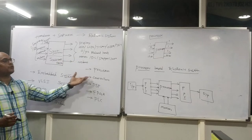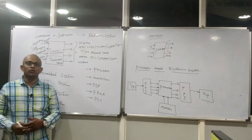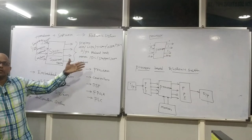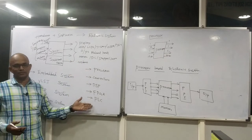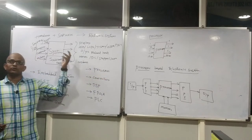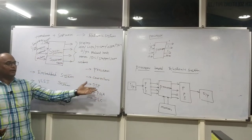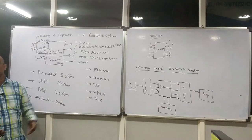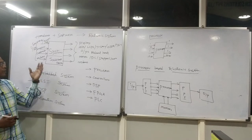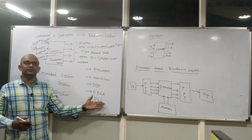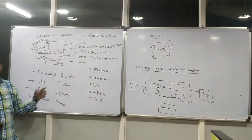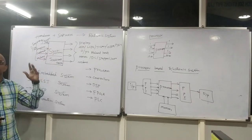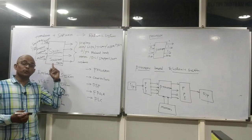Based on these programmable devices, you can design your system. The system is not always designed with only a processor or only a controller. Based on requirement, you have to choose your programmable devices. Every product is not going to maintain always with a processor — maybe you may find a PLC, maybe FPGA, digital signal processors, controllers, or processors. Based on the category of these intelligent devices, you are calling the system with a different name. So when can you call your product embedded? As hardware, you need to focus on the intelligent device or programmable device.